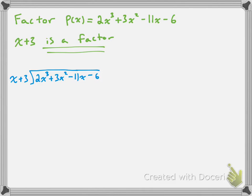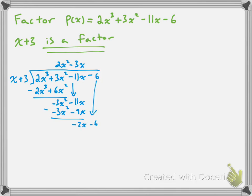x goes into 2x³ giving 2x² times, which gives us 2x³ + 6x². Subtracting, we get −3x² − 11x. (x + 3) goes into that −3x times, giving −3x² − 9x. Subtracting, we get −2x − 6. (x + 3) goes into that −2 times, giving −2x − 6, and a remainder of 0 — which makes sense since (x + 3) is a confirmed factor.